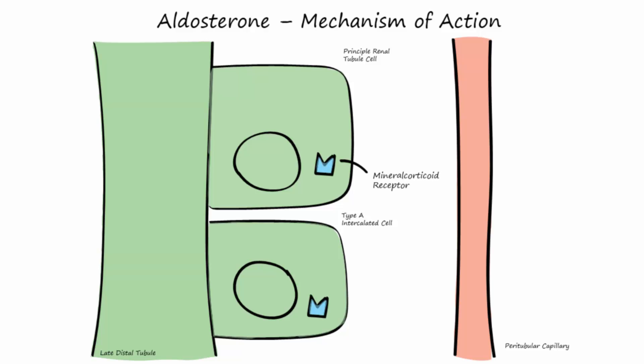As aldosterone is hydrophobic, it diffuses into the principal epithelial cells of the late distal tubules and cortical collecting tubules. And in the cytoplasm of the cell, it will bind with the mineral corticoid receptor to form an aldosterone receptor complex. This complex then diffuses into the nucleus of the cell.